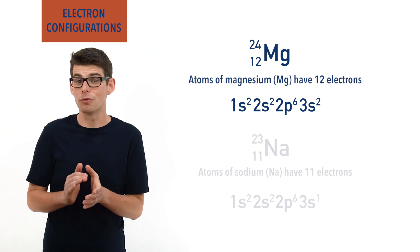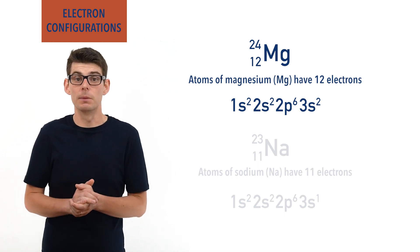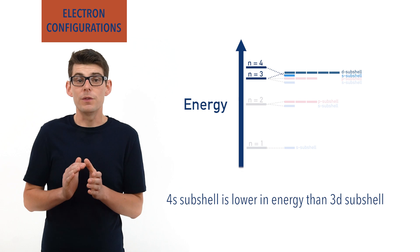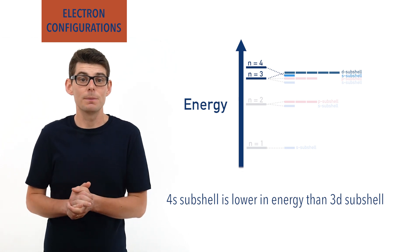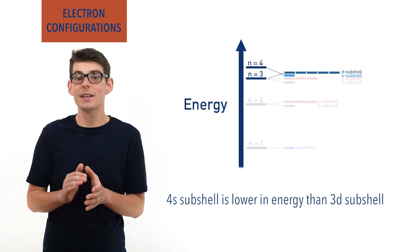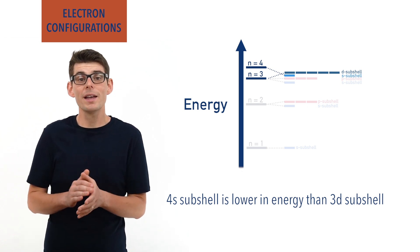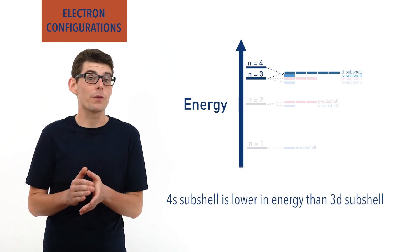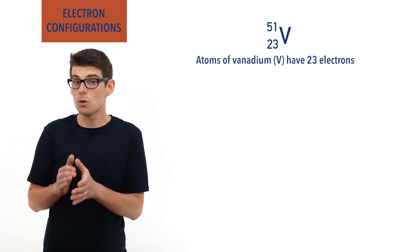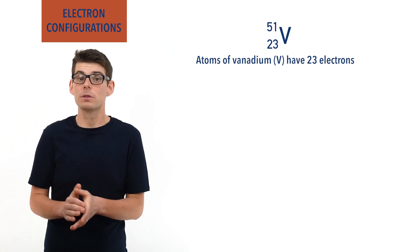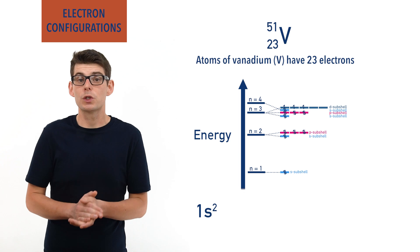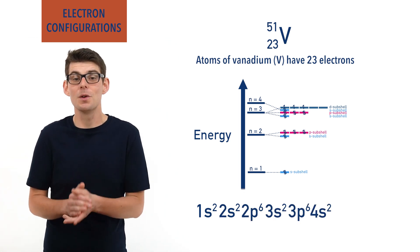One thing to be aware of when writing electron configurations for larger elements is that the 4s subshell is slightly lower in energy than the 3d subshell. This is due to the nature of the 3d orbitals and their shapes, giving them slightly higher than expected energies. What this means is that when filling up electrons in larger atoms, the 4s subshell will always fill up before the 3d subshell. For example, vanadium has 23 electrons and the 4s subshell fills before the 3d subshell, giving an electron configuration of 1s2, 2s2, 2p6, 3s2, 3p6, 4s2, 3d3.